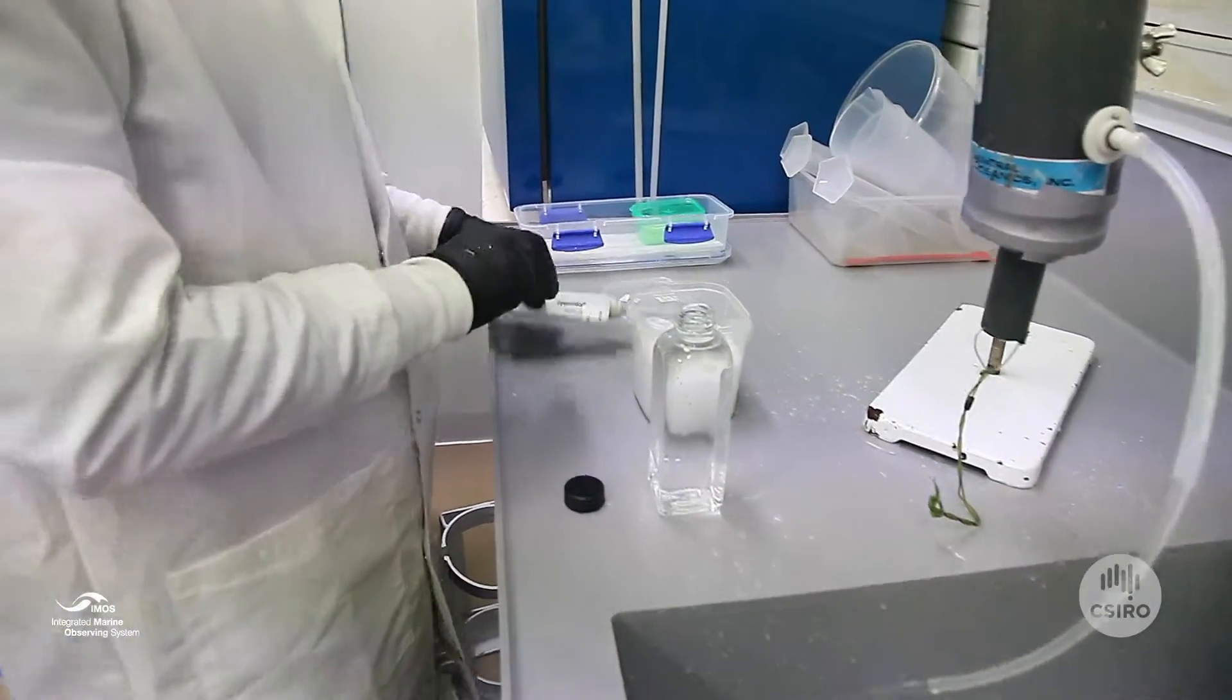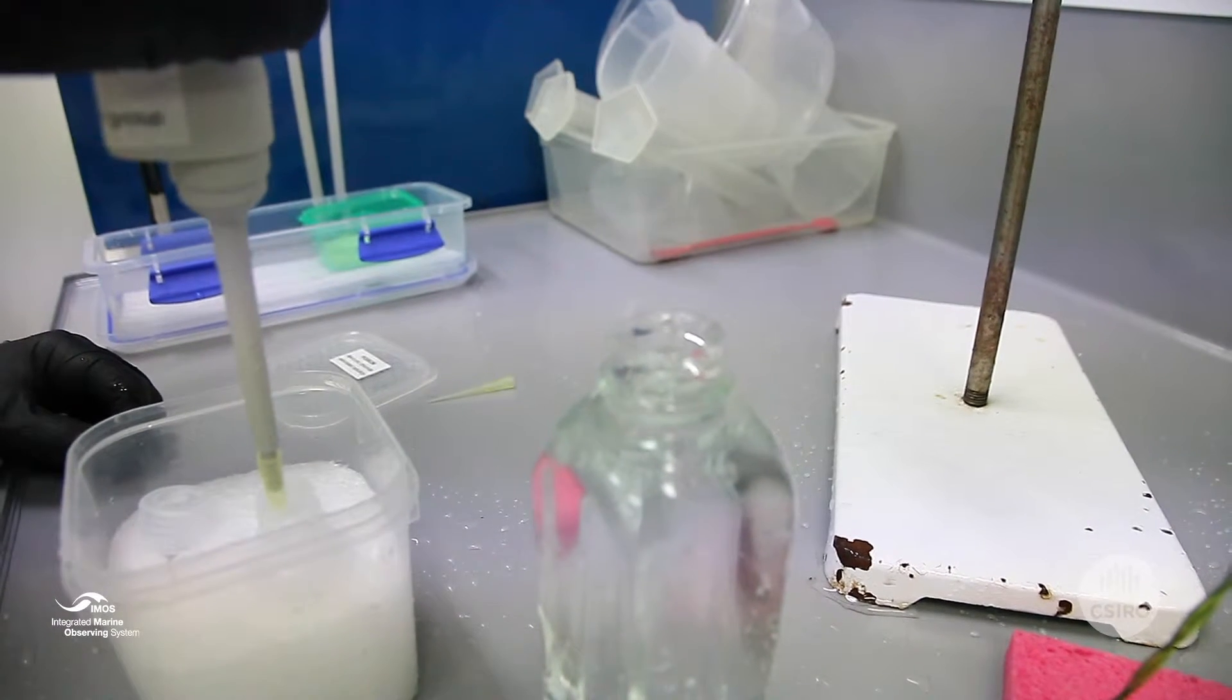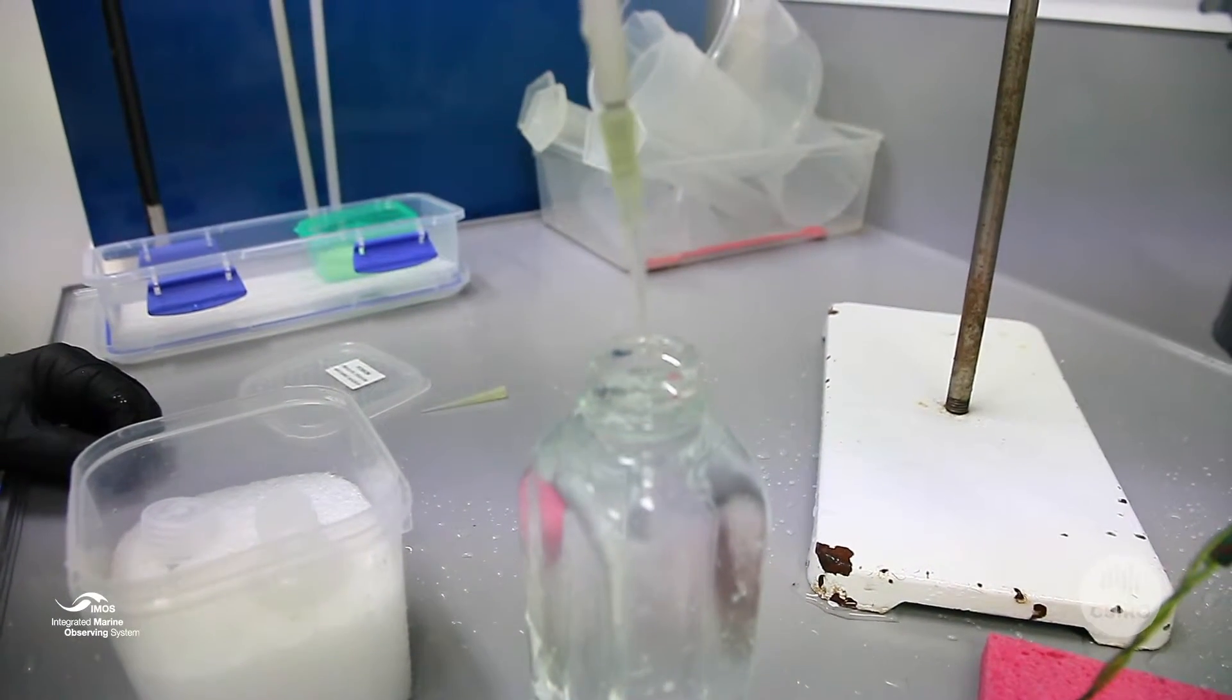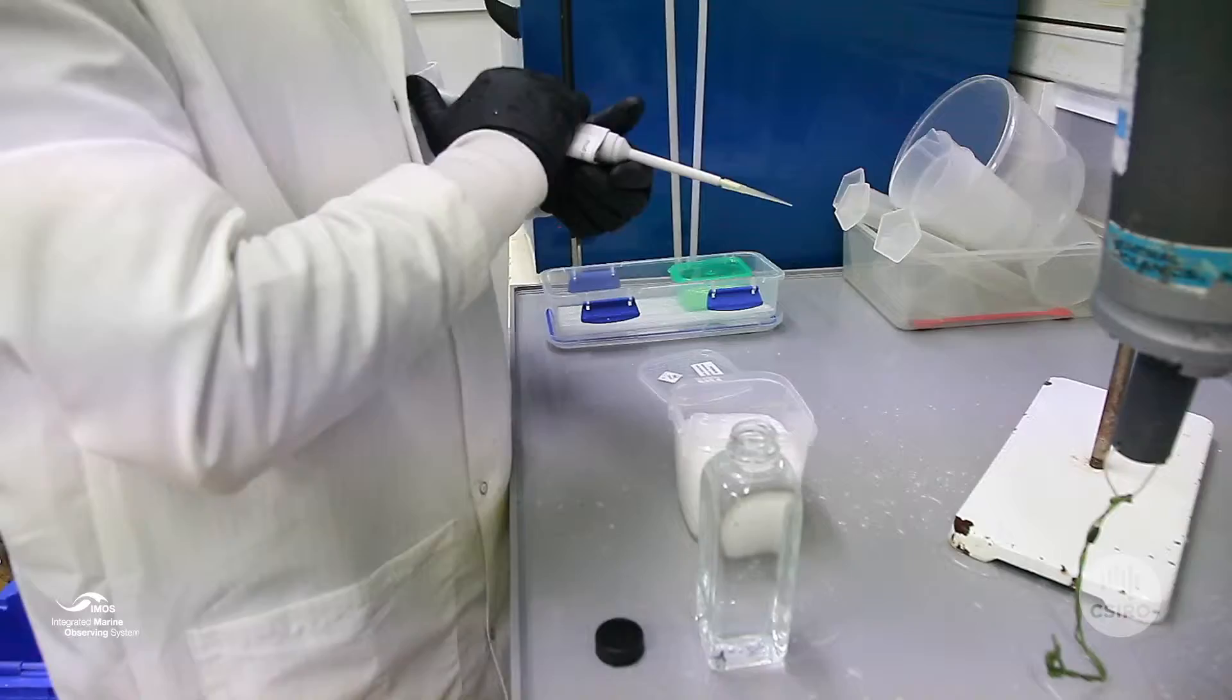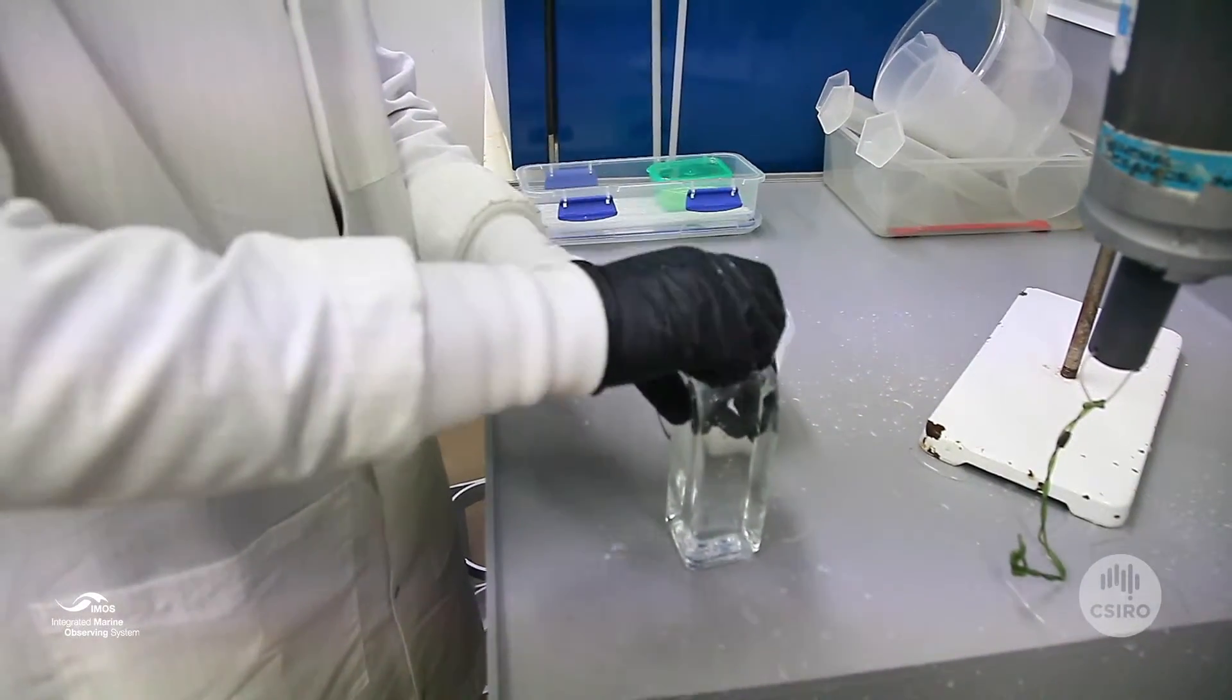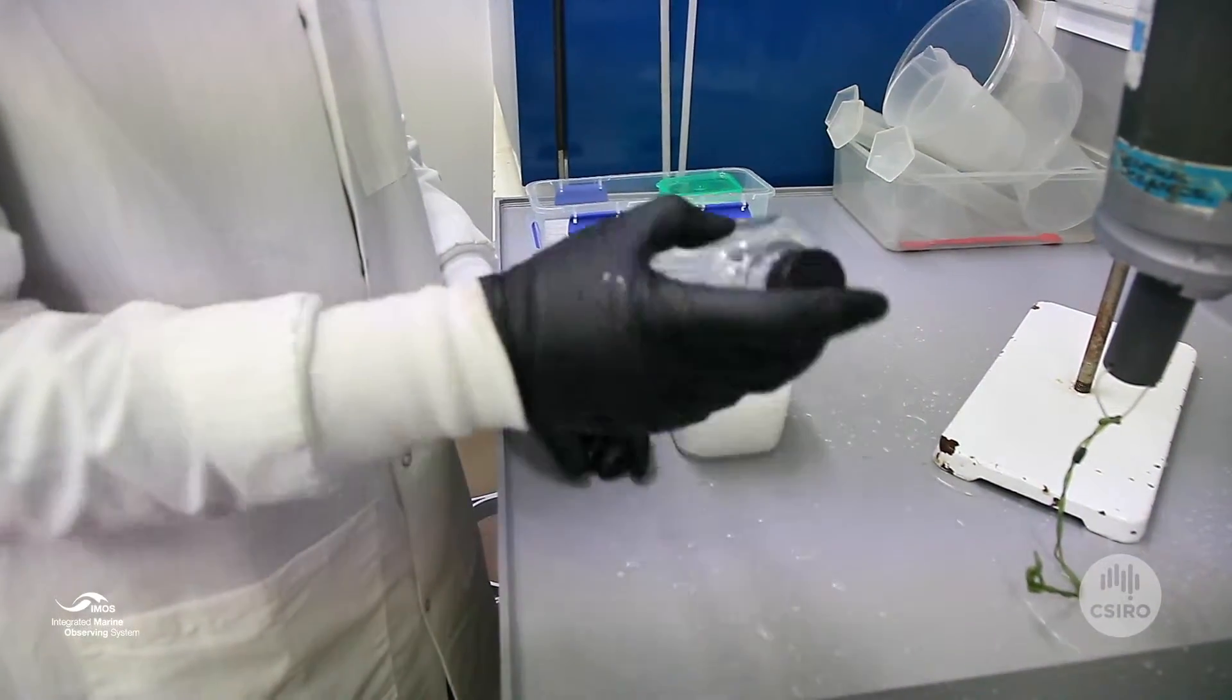Now you need to poison the sample. Take up one squirt of mercuric chloride and add it to the sample, keeping the tip out of the sample. Put the lid on and invert the sample twice.